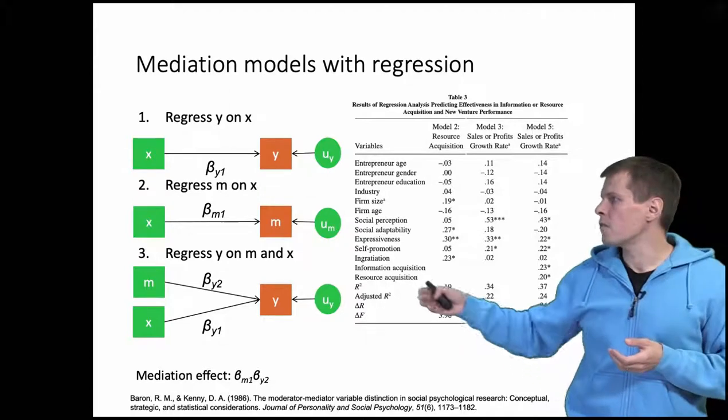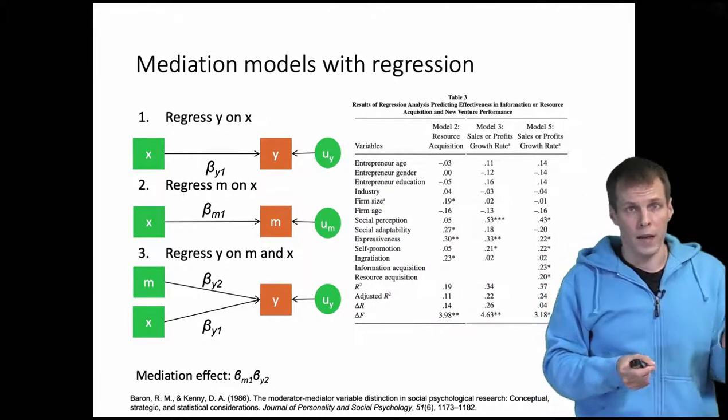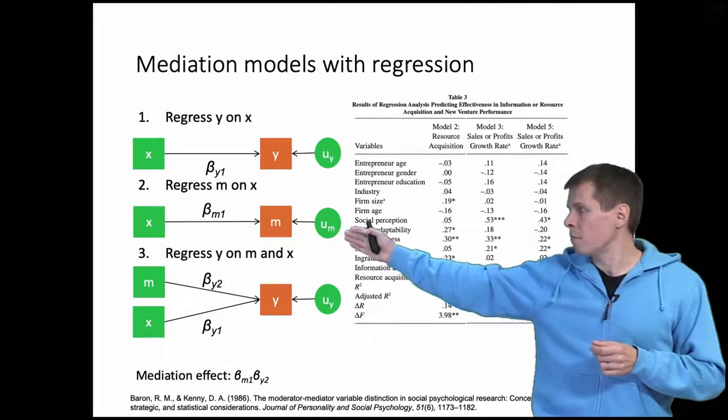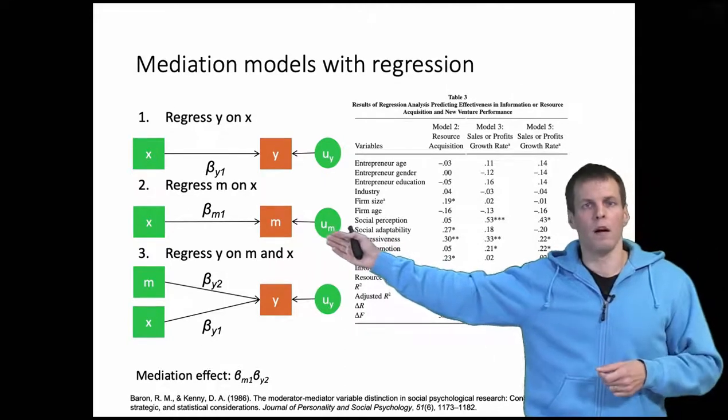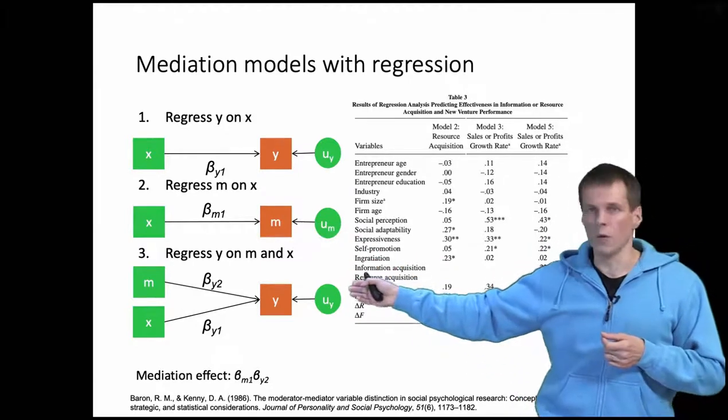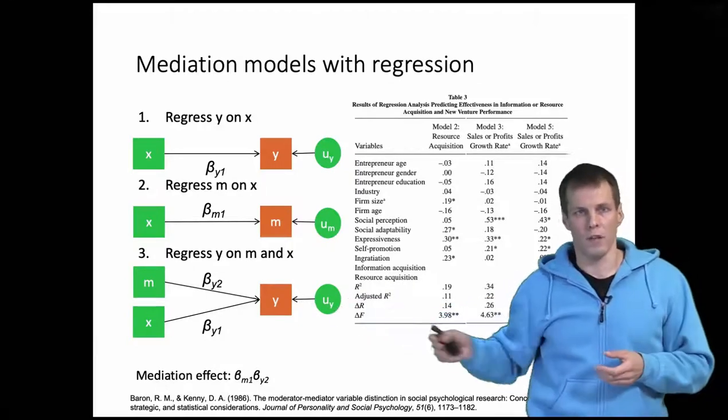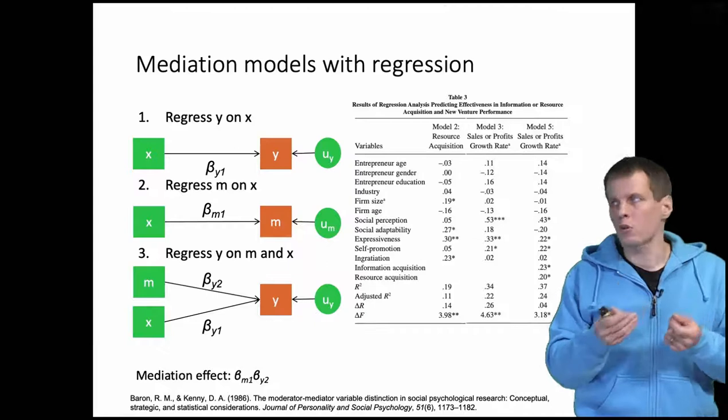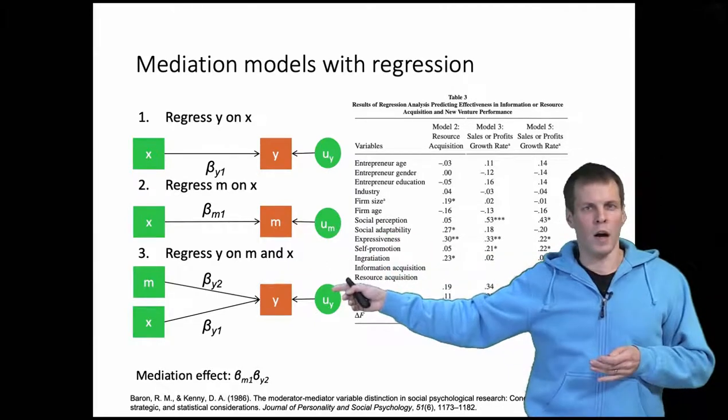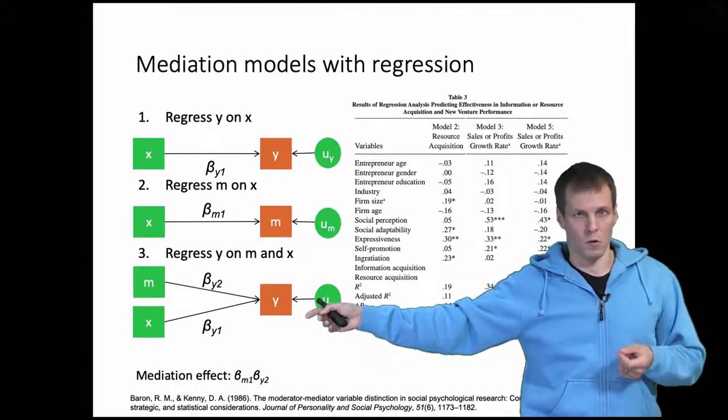So the idea first is that we regress y on x to see if there is a causal effect of x on y that can be mediated. Then we regress m on x, so we regress the mediator on the first independent variable, and then we regress y on both the mediator and the original variable. We ideally want to show that x influences m and m influences y, but not necessarily that x influences y when we control for values of m.